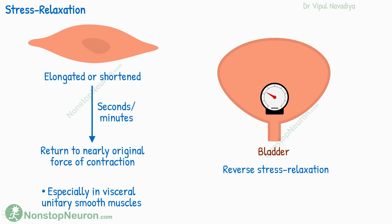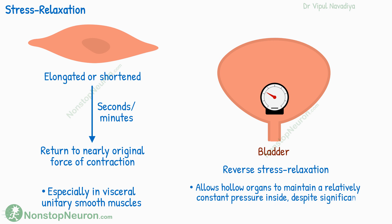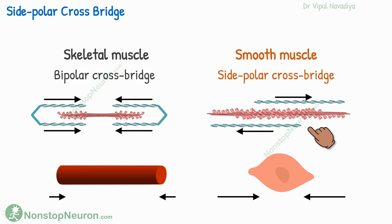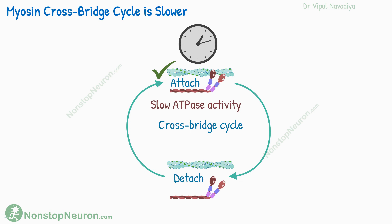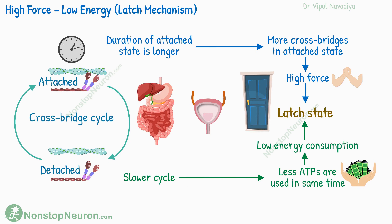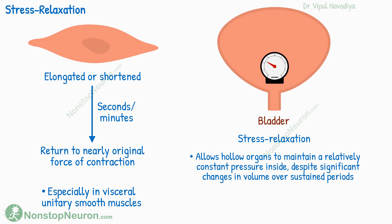The significance of stress relaxation is that it allows hollow organs to maintain relatively constant pressure inside their lumens despite significant changes in volume over sustained periods. In summary: the mechanism of control of smooth muscle contraction is different from skeletal muscle; sidepolar crossbridges allow more shortening of smooth muscles; the duration of the myosin crossbridge cycle, especially the attached state, is longer in smooth muscles; because of this, the onset of contraction and relaxation is slower; smooth muscles can maintain high force at low energy consumption for a long time — a mechanism called the latch state; and stress relaxation allows hollow organs to maintain relatively constant pressure despite significant changes in volume.